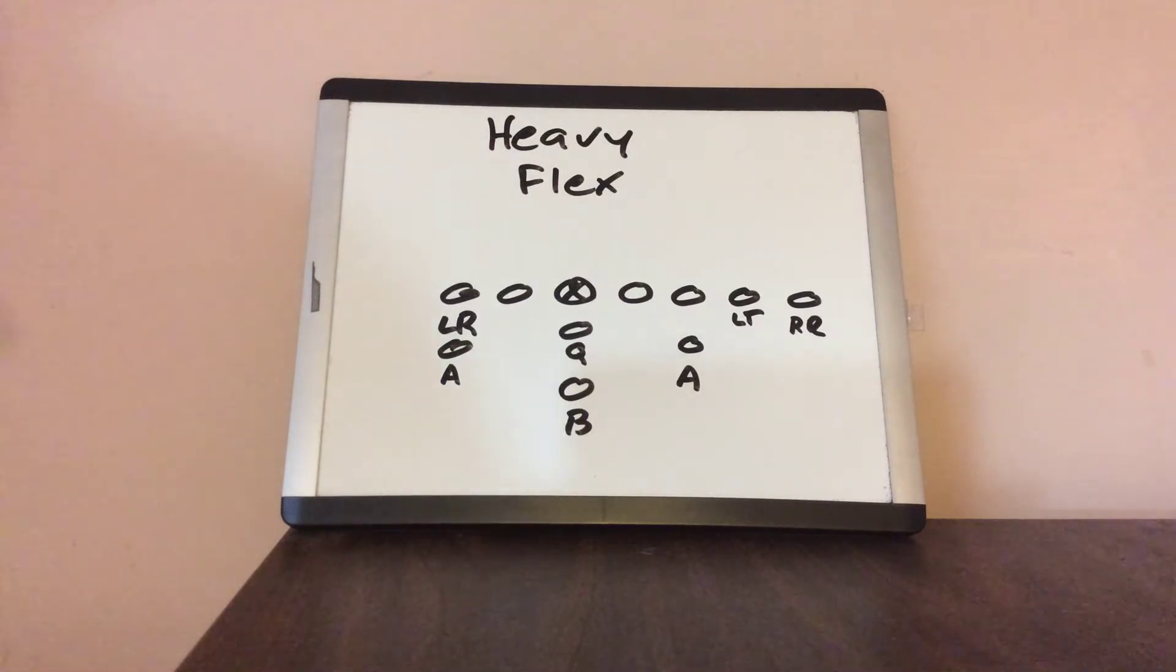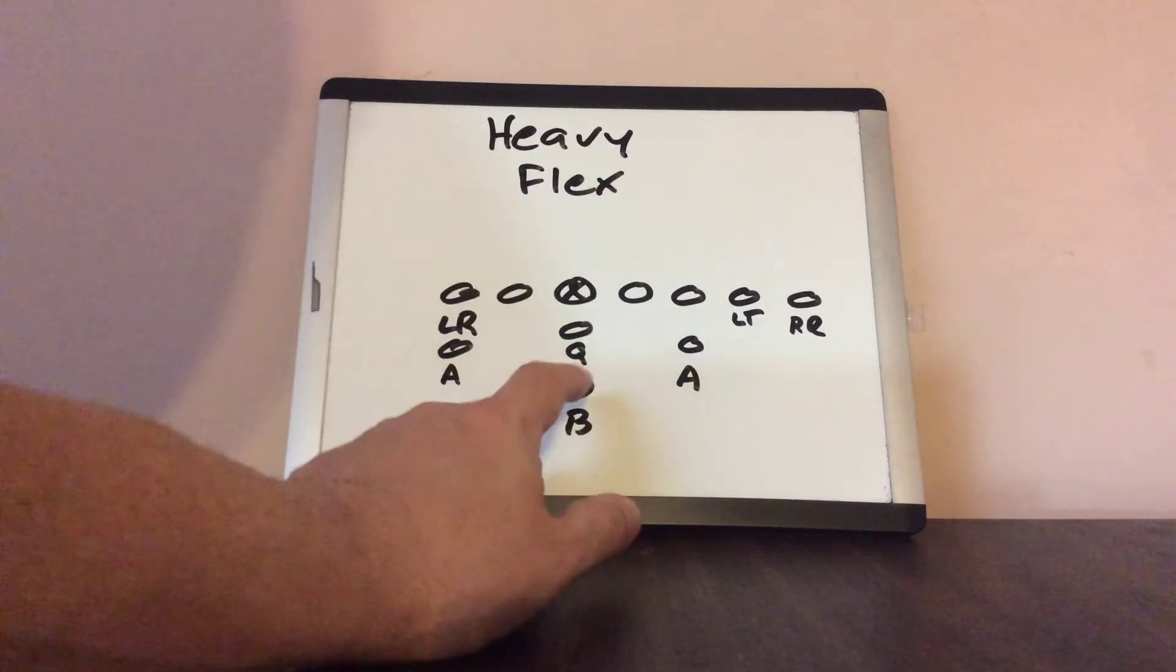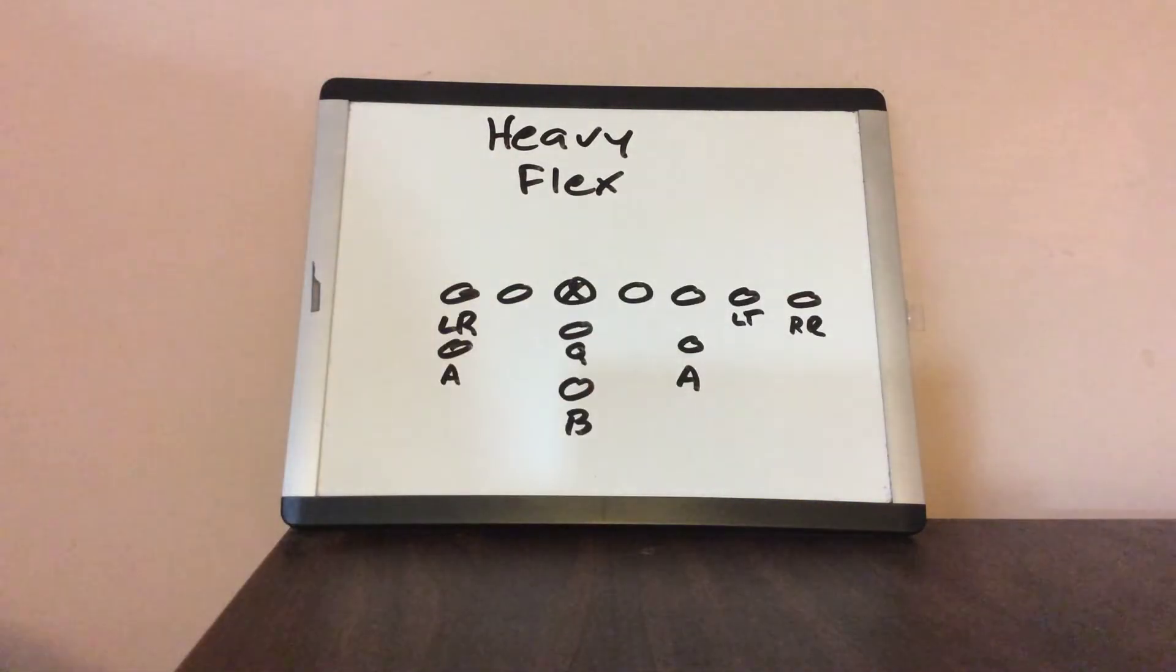A great play to run out of it is the kick play, also known as the zone power, where the B-back will kick number two and then simply the quarterback will run inside of that block with the backside A-back leading through.